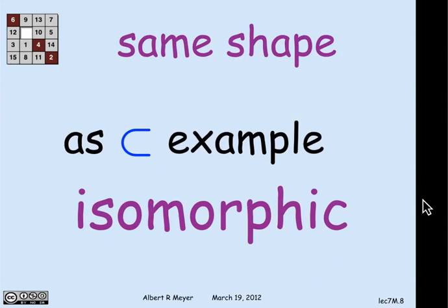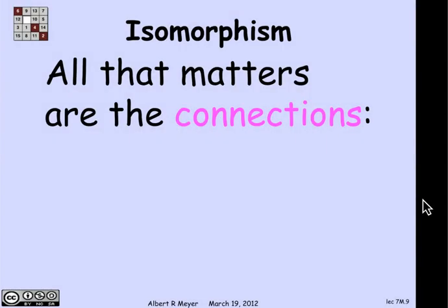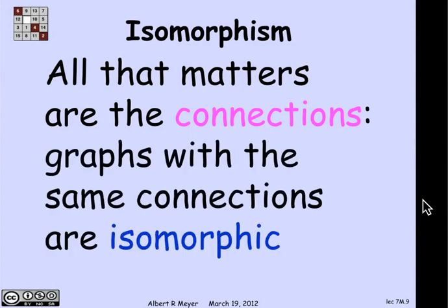And the precise notion or sense in which these things have the same shape, obviously, they can be drawn and one superimposed on the other. But abstractly, what we care about with partial orders and digraphs in general is when things are isomorphic, is the technical name for the same shape. And isomorphic means that all we care about are the connections between corresponding vertices.